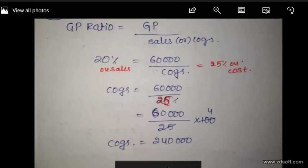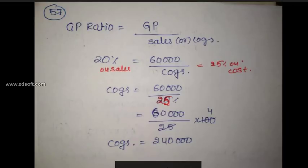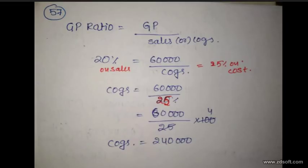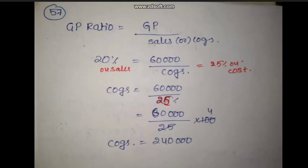The 57th question: gross profit to turnover ratio is 20%. If nothing else is specified, it is taken on sales. Gross profit is ₹60,000; find cost of goods sold. Gross profit ratio = gross profit / sales = 20%. If gross profit is 20% on sales, it is 25% on cost (1/5 on sales = 1/4 on cost). Cost of goods sold = ₹60,000 / 25% = ₹2,40,000. Option C is correct.